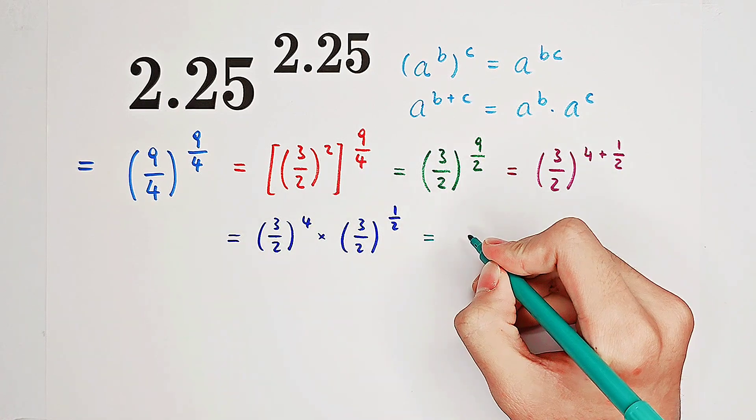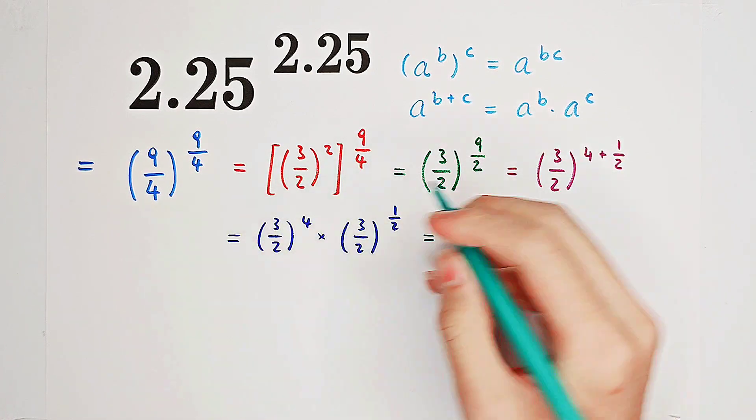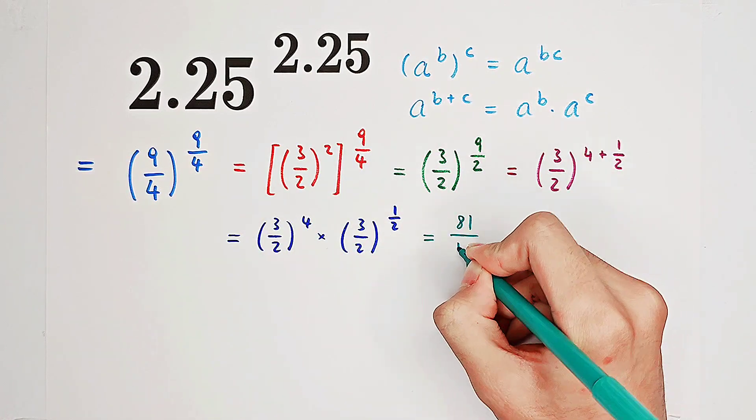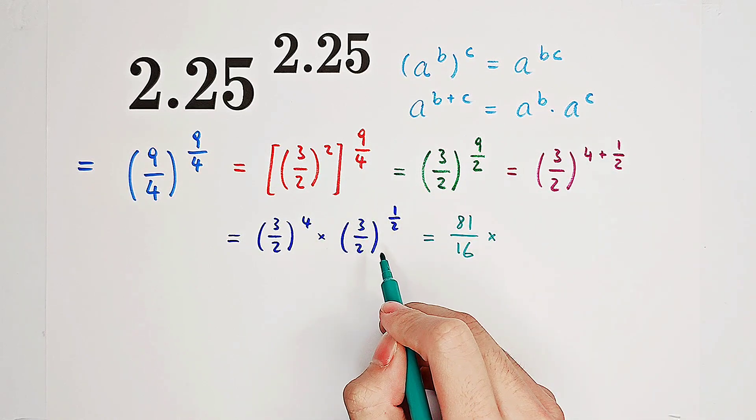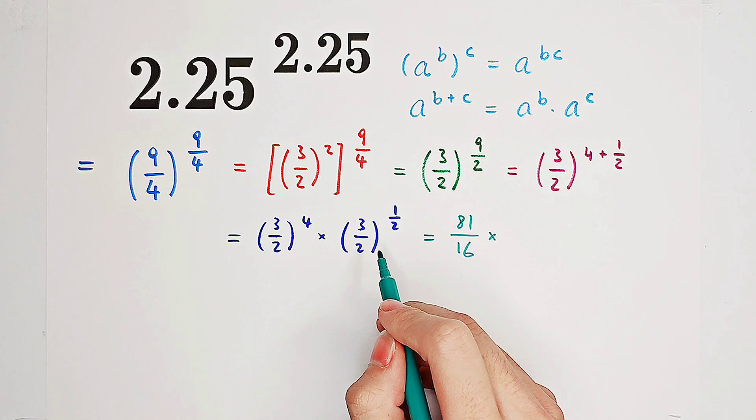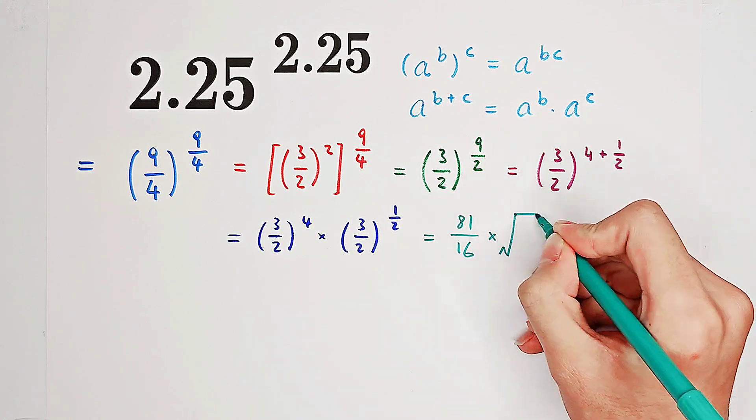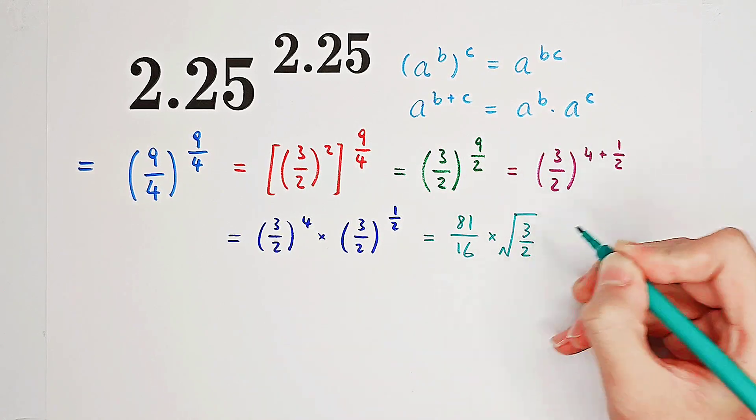Now, 3 to the power of 4 over 2 to the power of 4 is all this one. It's 81 over 16, and then times a number to the power of 1 half is just the square root of this number, isn't it?